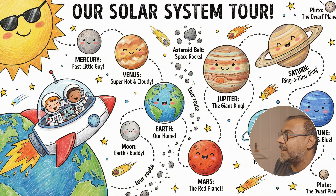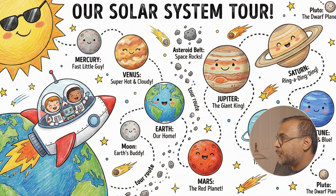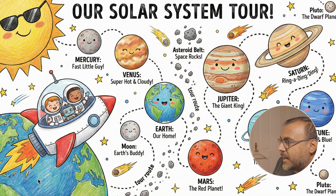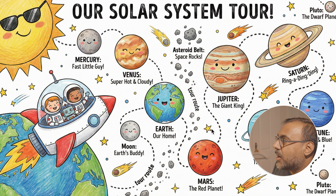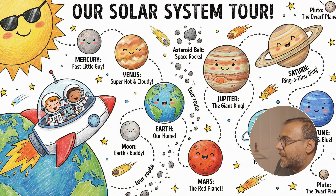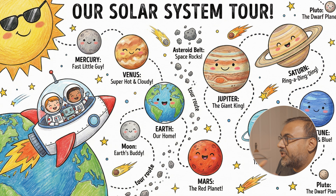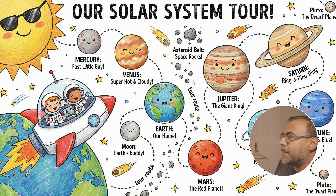I told it to illustrate a solar system tour for a kid's poster for my son, and this is what it came up with. It's cute, friendly, and it makes sense. It understood that here's the Earth, and we'd take a tour route starting from Earth — go to the Moon first, come back to Earth, then go to Venus, Mercury, and the Sun, or go to Mars, Jupiter, Uranus, or from Jupiter to Saturn. It's not perfect, there are a few issues, but it has a general understanding of the solar system and what the journey would look like. It's got the right style for a kid's poster, and again, all the text is perfect and makes sense: 'Mercury, the fast little guy. Venus, super hot and cloudy. Earth, our home. Moon, Earth's buddy.'